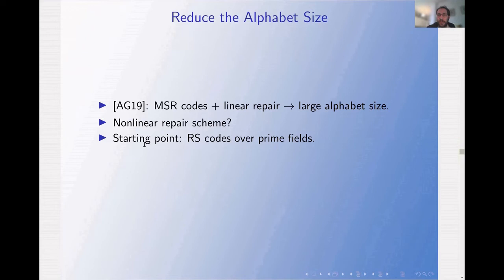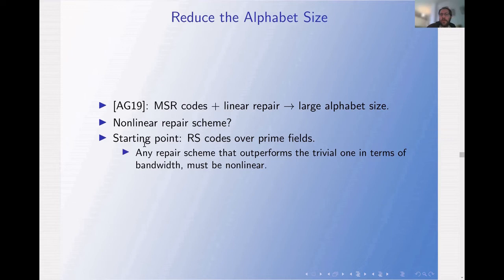So what about non-linear repair schemes? Can a non-linear repair scheme help us reduce the alphabet size? Our starting point was to look at Reed-Solomon codes over prime fields. Any repair scheme for Reed-Solomon codes over a prime field that outperforms the trivial repair scheme must be non-linear, because there are no linear functions from a prime field to a proper subset of the prime field.